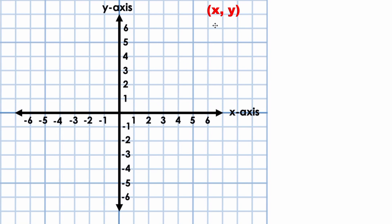The second number listed is always the y-coordinate. This number refers to the point's location along the y-axis. You may also hear the coordinates referred to as an ordered pair. This is because the coordinates are a pair of numbers that are always listed in the same order: x and y. If we know the x and y coordinates for any point, we can locate that point on the coordinate plane.